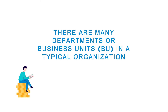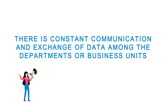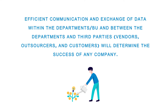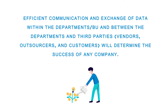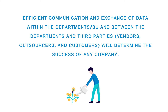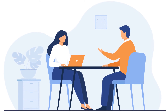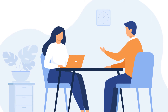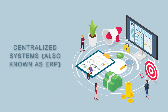From this scenario, we can deduce the following salient issues: there are many departments or business units in a typical organization; there is constant communication and exchange of data among them. Efficient communication and exchange of data within departments and between departments and third parties — vendors, outsourcers, and customers — will determine the success of any company. Depending on the mode of managing communication and data exchange, enterprise software systems are broadly classified into decentralized systems and centralized systems, also known as ERP.